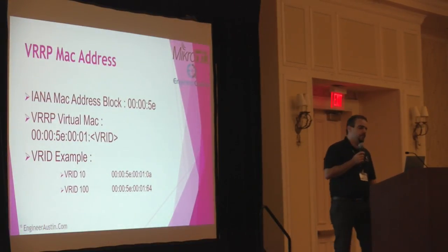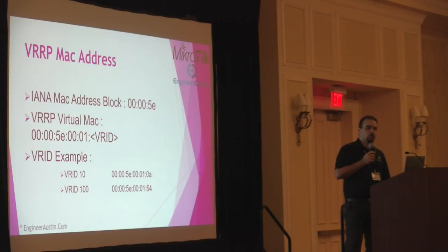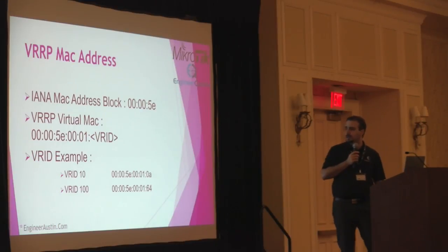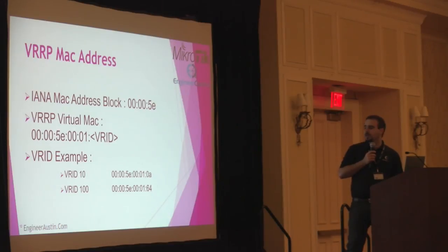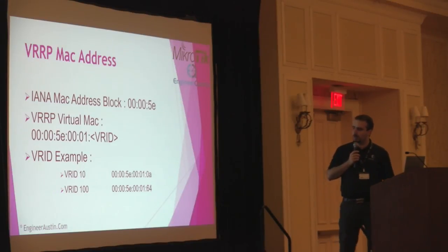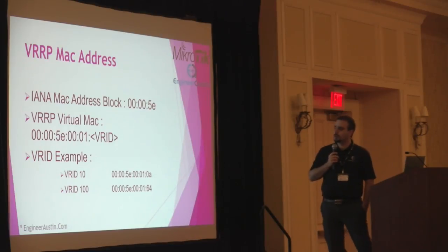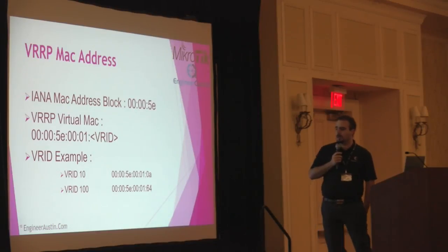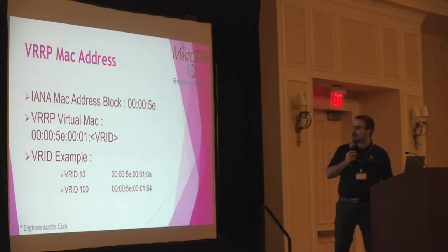Each VRRP router is associated with a specific MAC address. VRRP automatically assigns a MAC address to the VRRP interface based on the IANA standard. The VRRP MAC address starts with the IANA prefix 00:00:5E, followed by the VRRP MAC address block 00:01, and then the virtual router group ID in hexadecimal format.